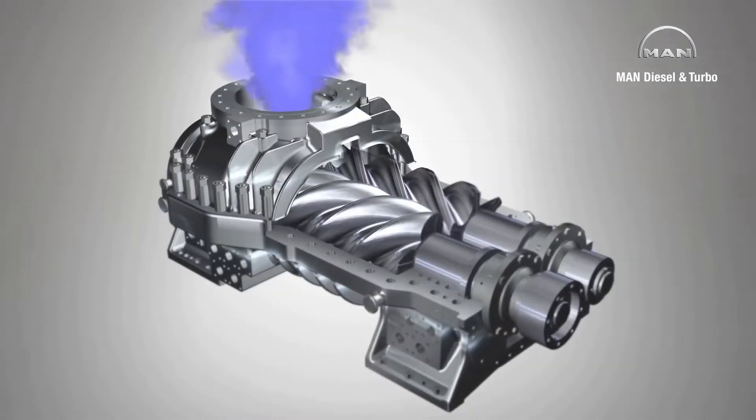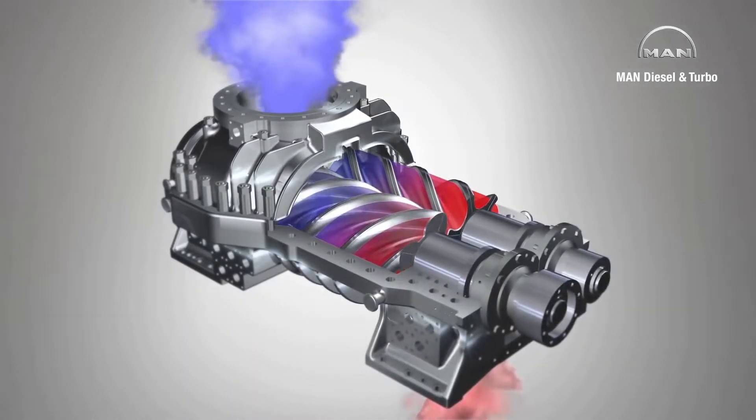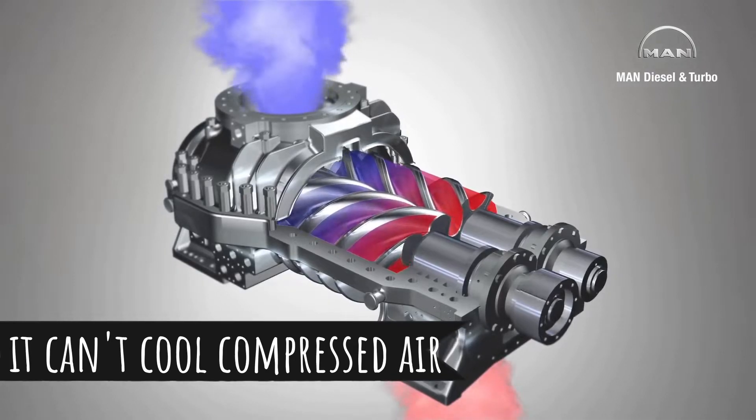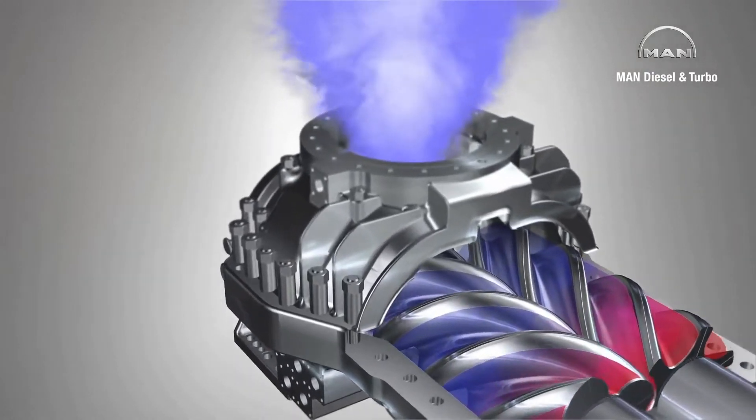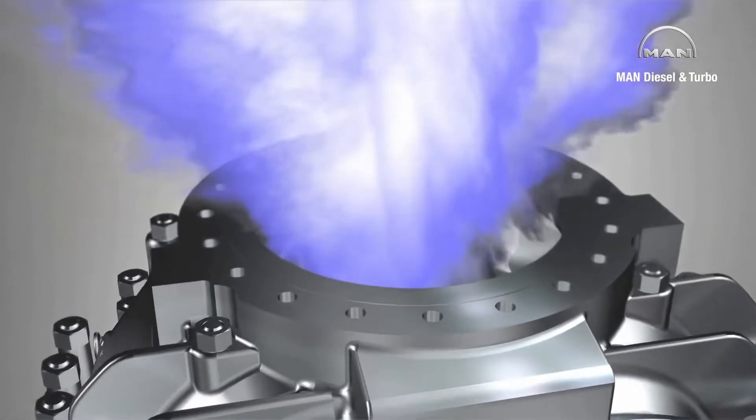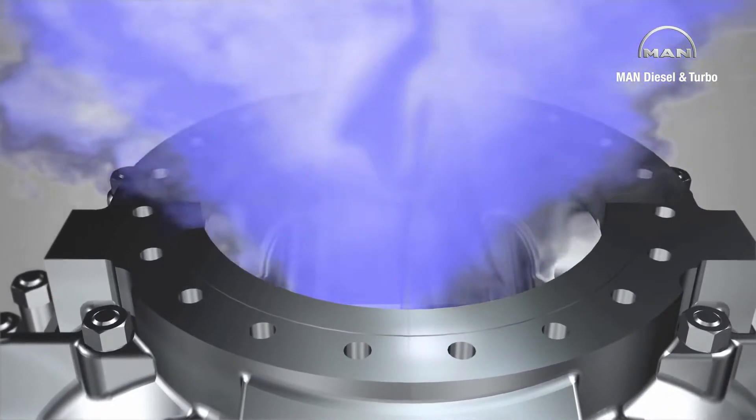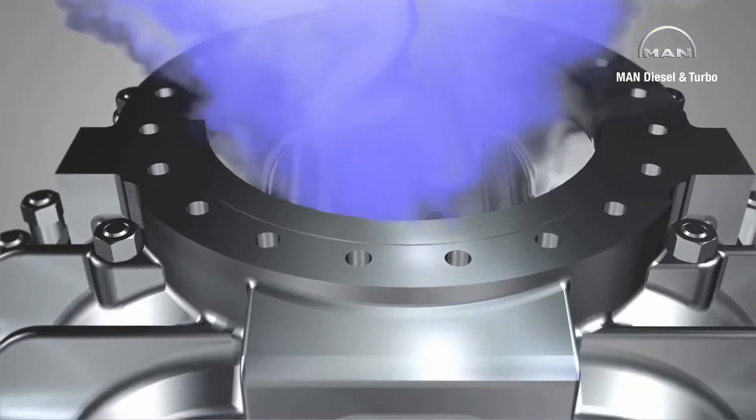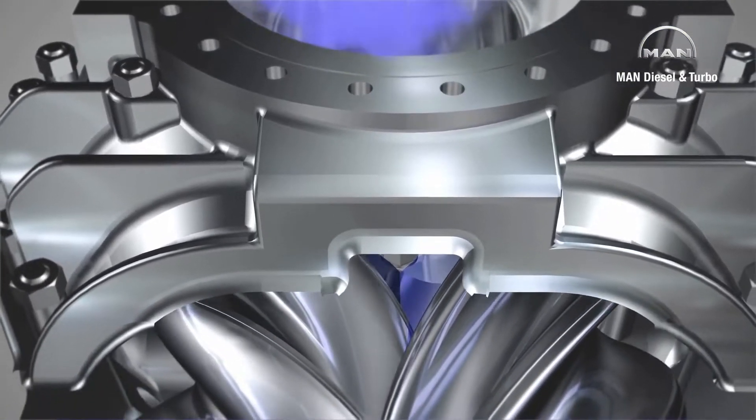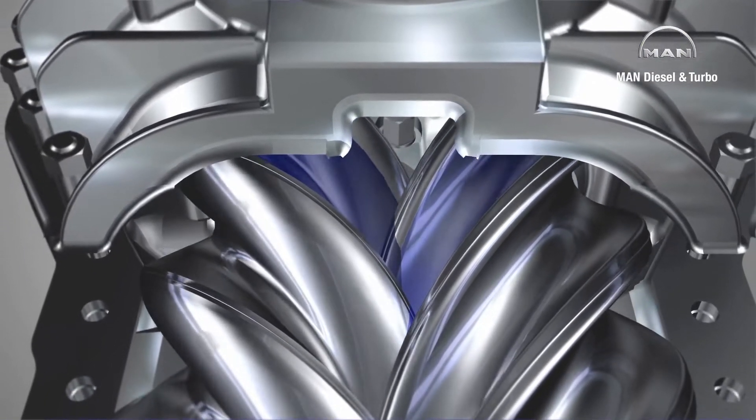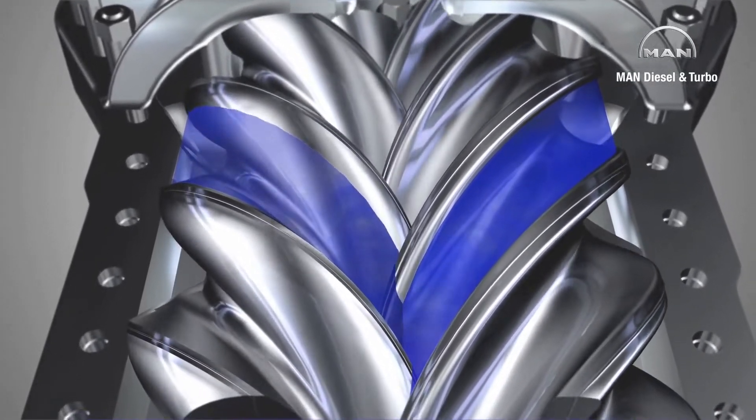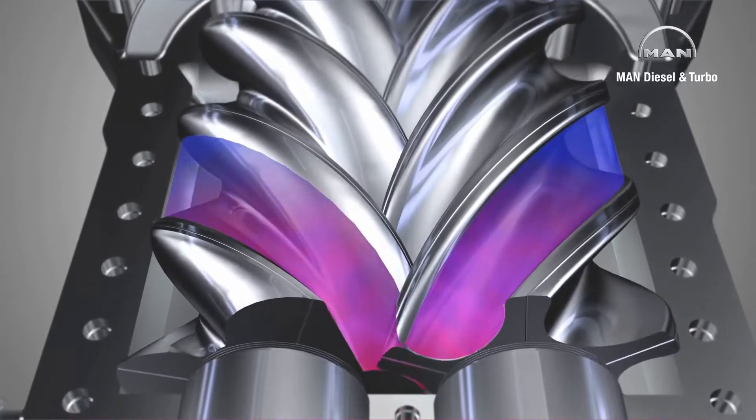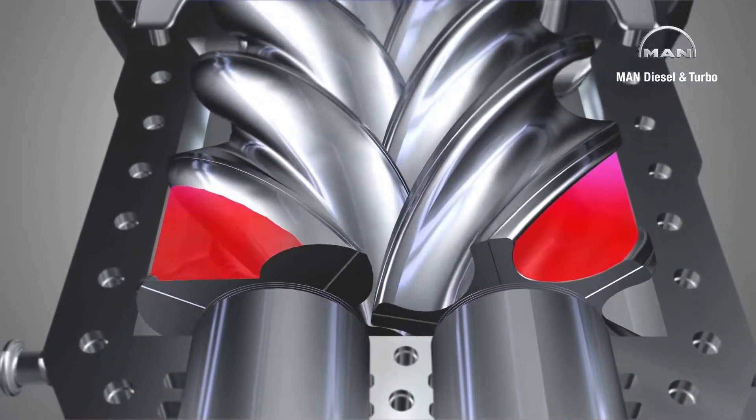Our supercharger works similar to a turbocharger, but it takes power directly from the engine through a belt connected to the crankshaft, as you can see in this demonstration. The cooler air, shown in blue, goes through a mechanism which compresses the air directly into the manifold.